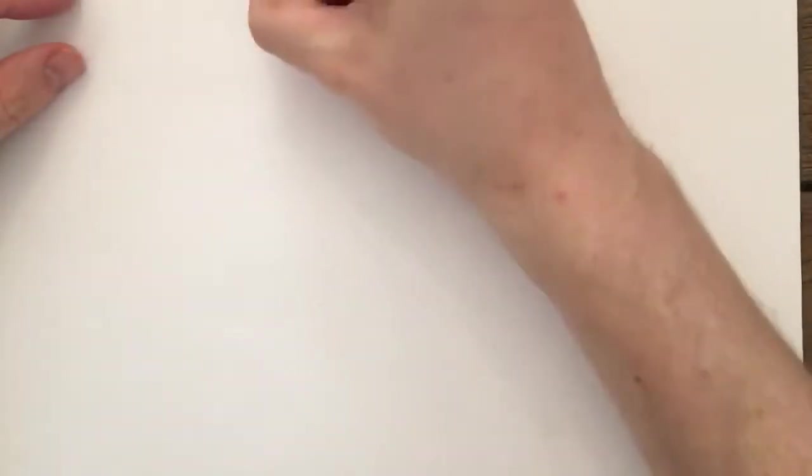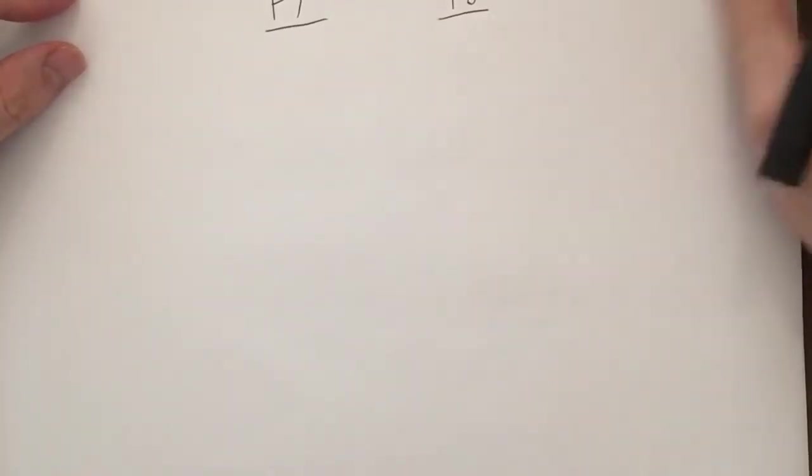Alright, so this is the penultimate video in this unit and we're going to focus today on F7 and F8. Now in the previous video we spoke about how we multiply algebraic fractions and how that's slightly different from how we multiply normal fractions.